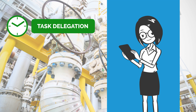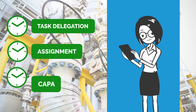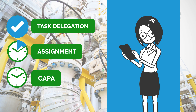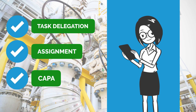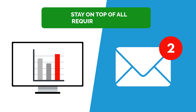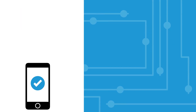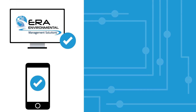ERA's tool also expedites her refrigerant unit inspection task delegation, assignment, and corrective and preventative action while ensuring that service and maintenance are done on time. ERA's threshold notifications and automated email alerts ensure that her plant stays on top of all required reports. The platform is also accessible via mobile device and desktop, which allows Nancy to access the ERA software from anywhere.